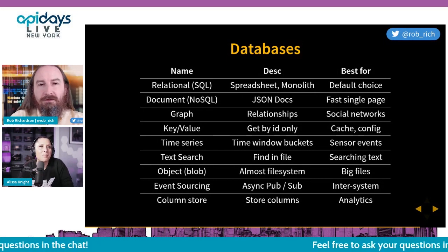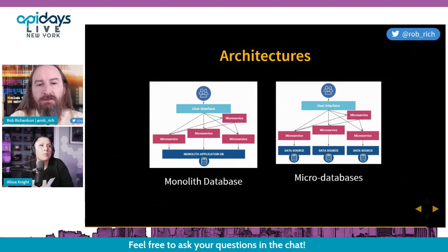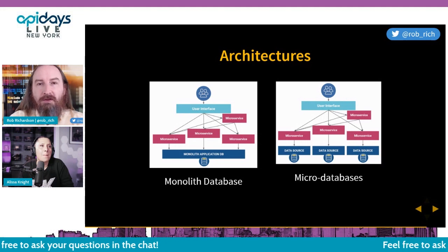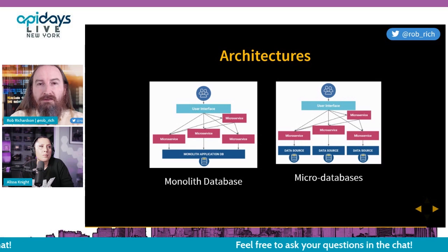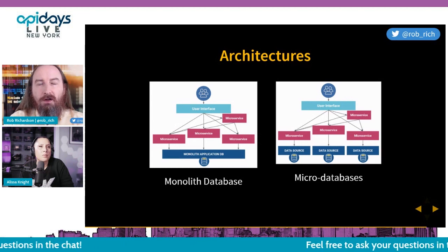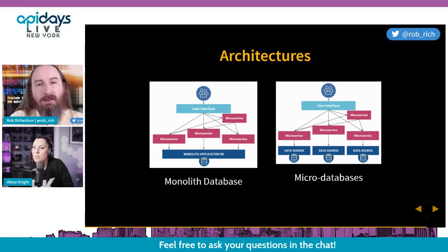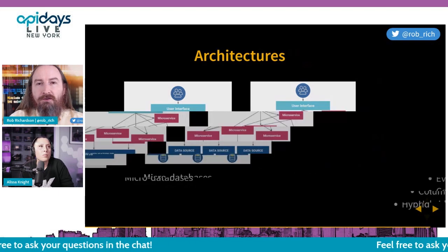Let's recap what we learned today. We started our journey from monolithic database to micro databases. In a monolithic database, we can use a bounded context to get a micro database-like experience even with just one big database. Once we have enough automation to automatically subscribe our databases into authentication and backup schemes, we can move to micro databases.